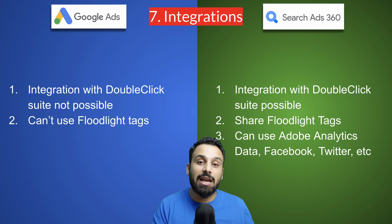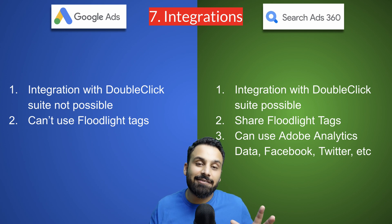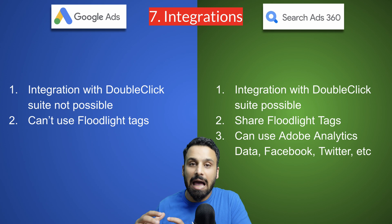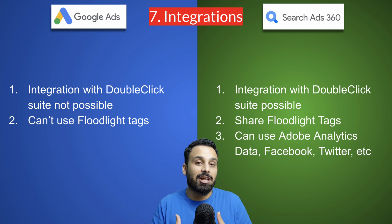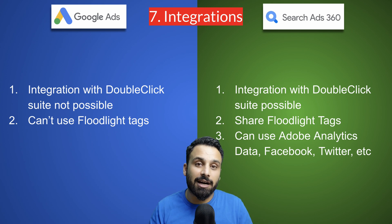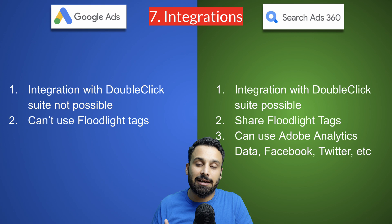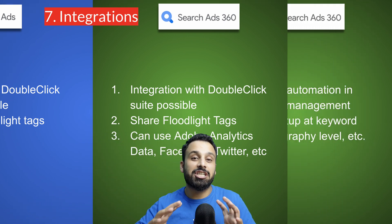The seventh difference is integrations. Although both are Google products, Google Ads cannot be integrated with the DoubleClick suite. Search Ads 360 can be natively connected to BigQuery and other tools for advanced reporting. If you are running campaigns on Campaign Manager 360 or DV360, you can share the same Floodlight tags with Search Ads 360 for unified and more accurate reporting. Google Ads cannot share Floodlights with other DoubleClick products. Search Ads 360 can also be integrated with Adobe Analytics, allowing you to push audiences and data between the two platforms.